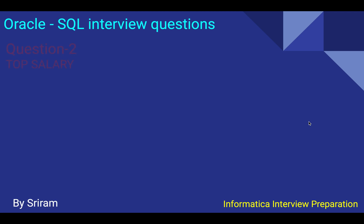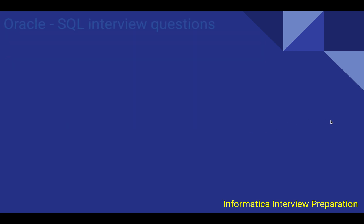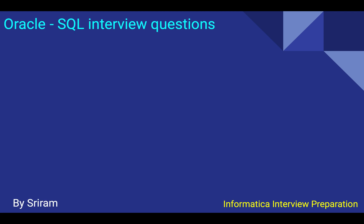The second question is always about top salaries. Write a query to display the Nth highest salary — 7th, 10th, whatever. We use ROW_NUMBER: SELECT salary FROM (SELECT DISTINCT salary FROM emp ORDER BY salary DESC) WHERE ROWNUM = N. As usual, the interviewer may ask for a version without ROW_NUMBER or ROWID, so you can try a second option for that.